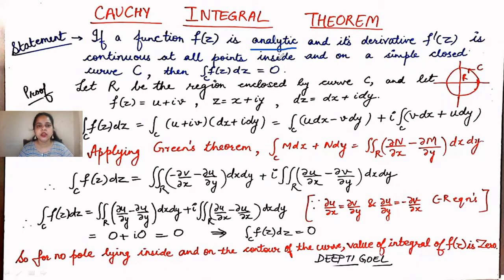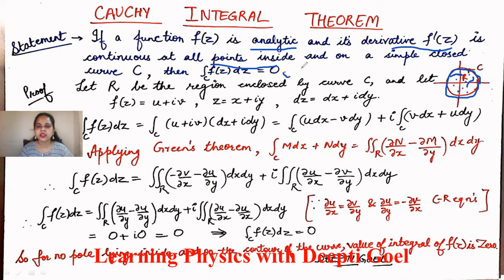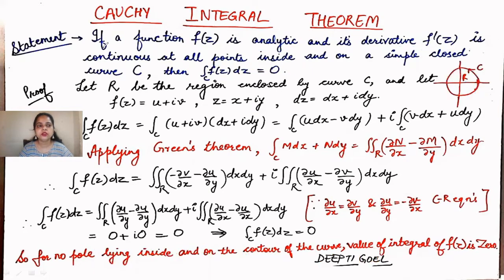So if a function is analytic and its derivative is also continuous at all points inside a simple closed curve C — which could be a circle, a rectangle, or any arbitrary closed curve — and the function is analytic at each and every point inside region C, meaning it is not infinite, it is derivable and continuous throughout, then we can directly say that the integral of this function over this region will be equal to zero.